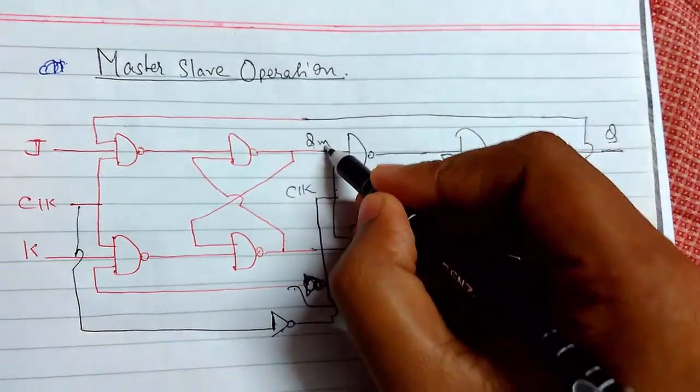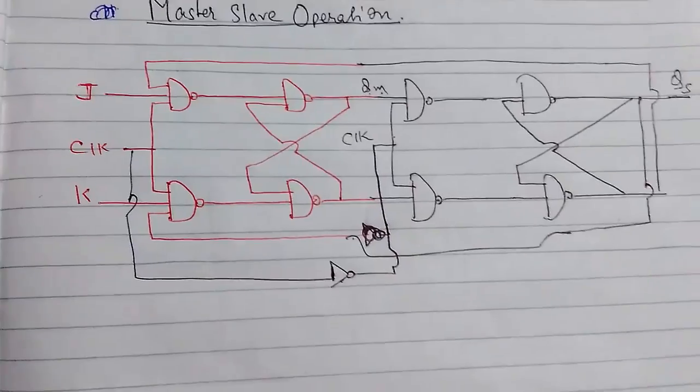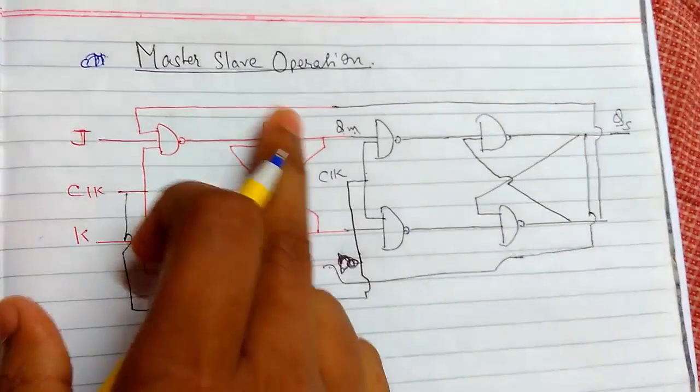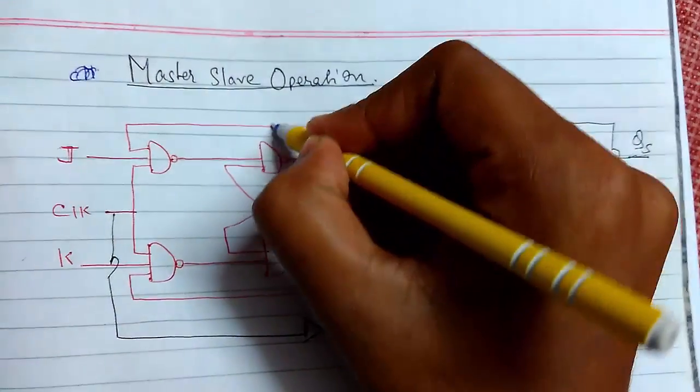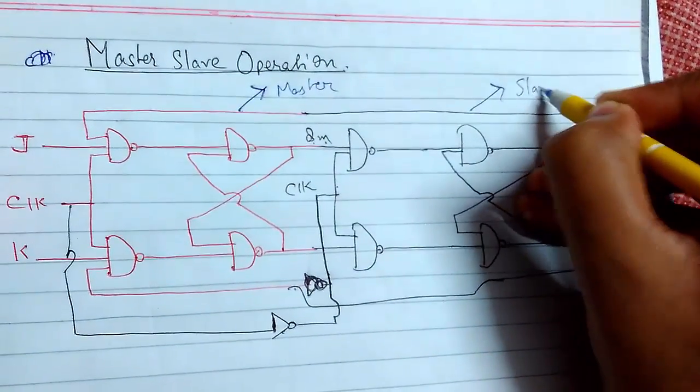I am writing this is Q, and this is the master and this is slave. This one is the master and this part right here is the slave.